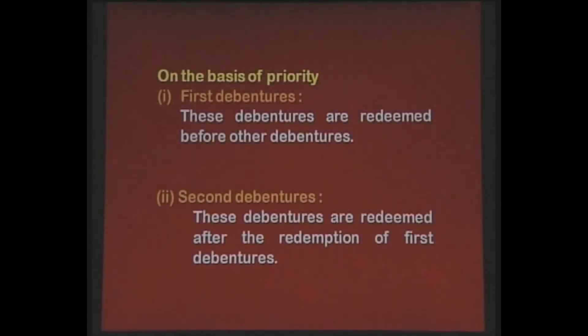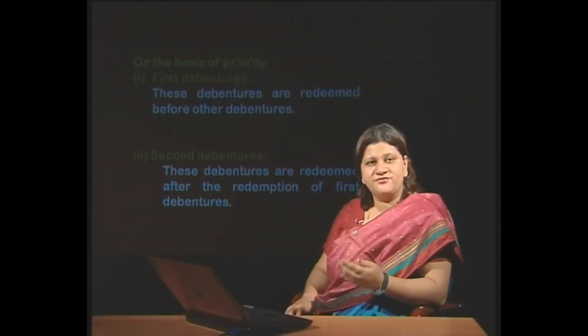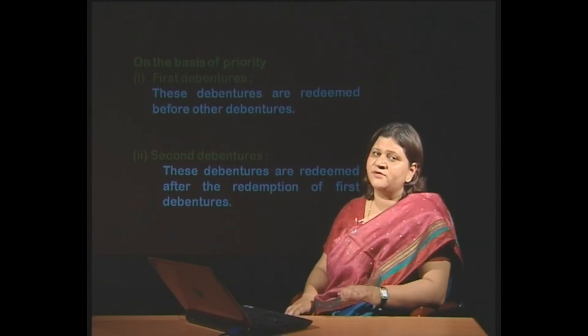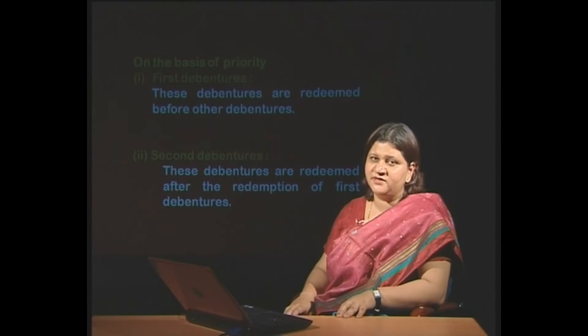On the basis of priority, debentures are classified as first debentures and second debentures. First debentures are those preferential debentures which are redeemed before other debentures — they are preferential in their payments and have priority in payment of their money. Second debentures are those which are redeemed after the redemption of first debentures. Their priority is second in comparison to the first debentures. Still, they are debentures on the basis of priority as far as their payments are concerned.